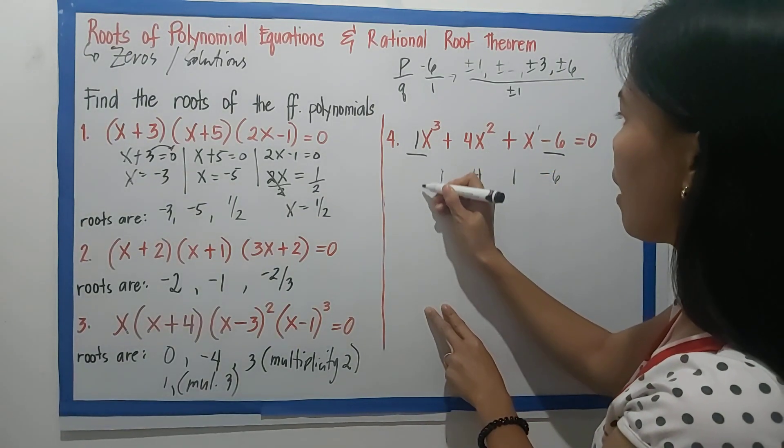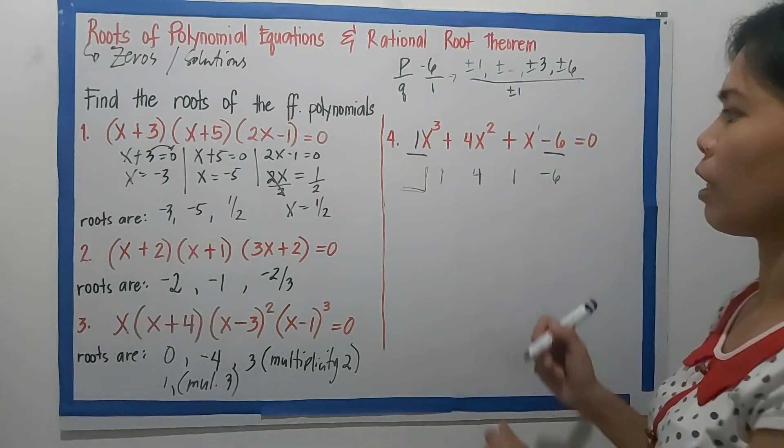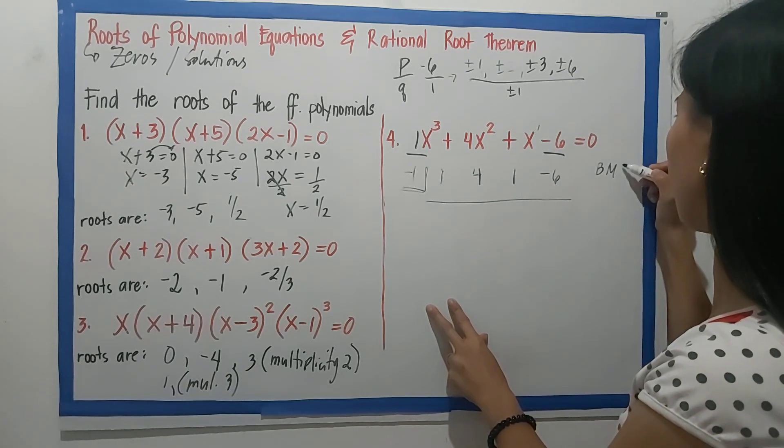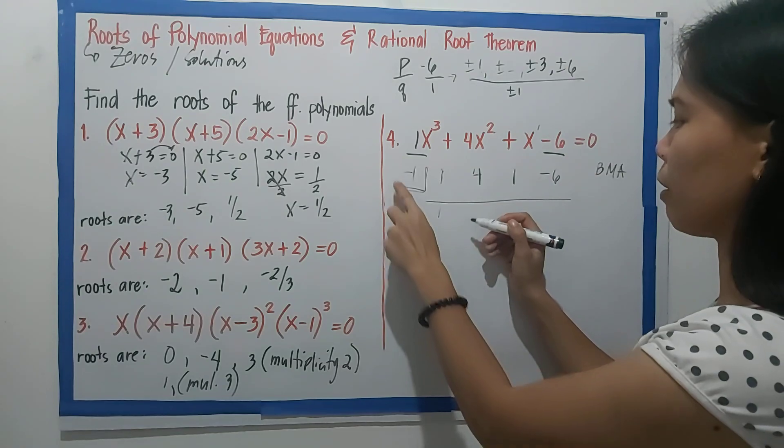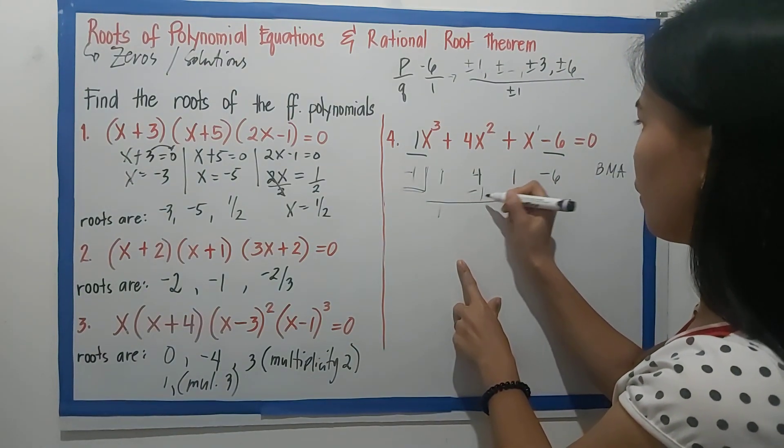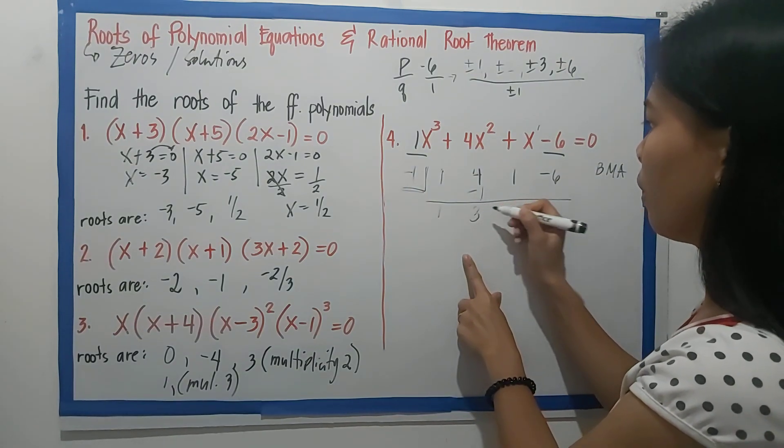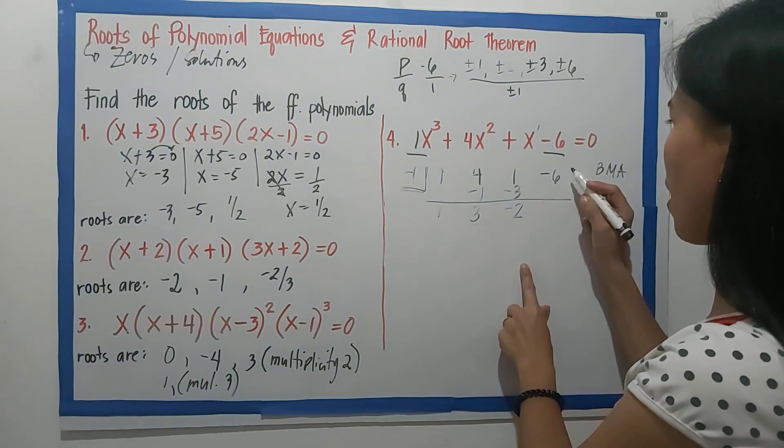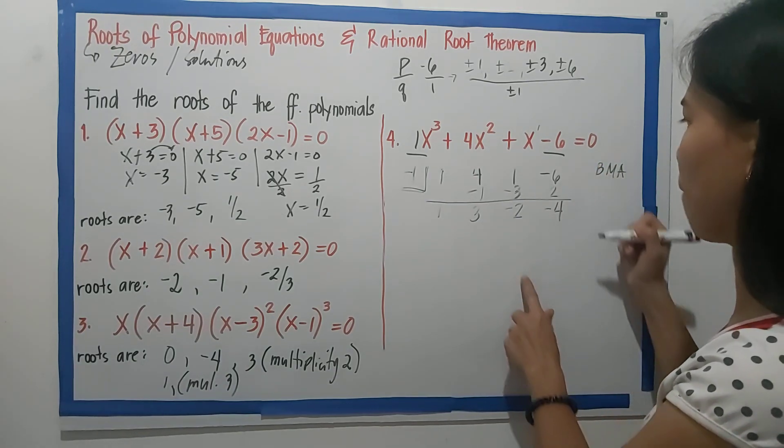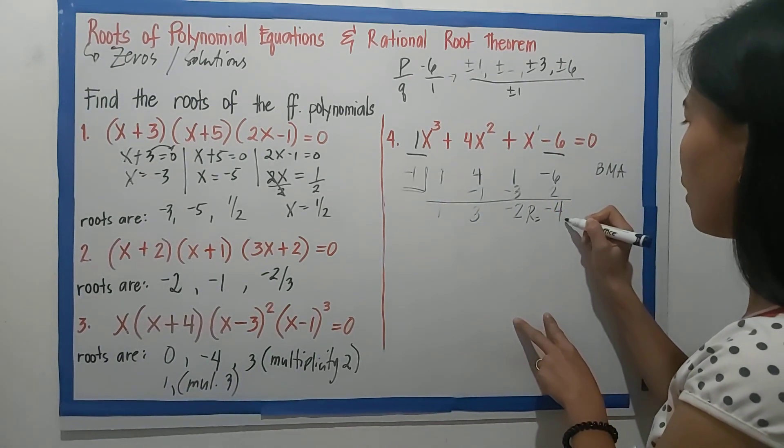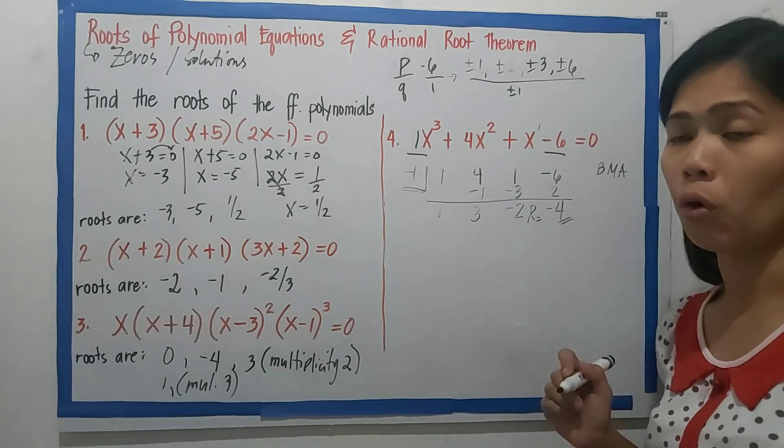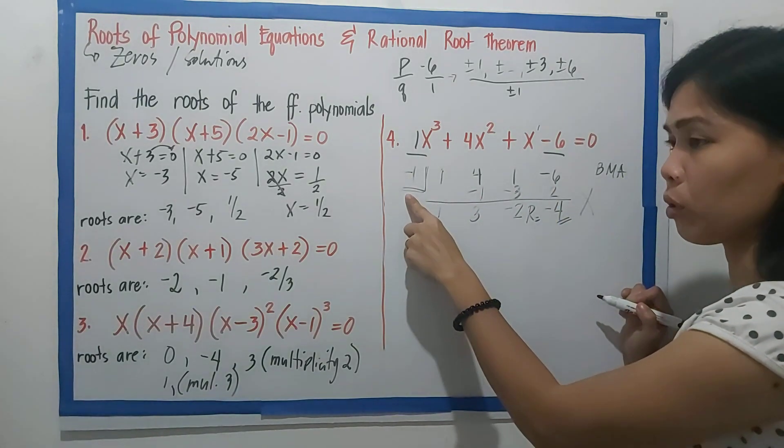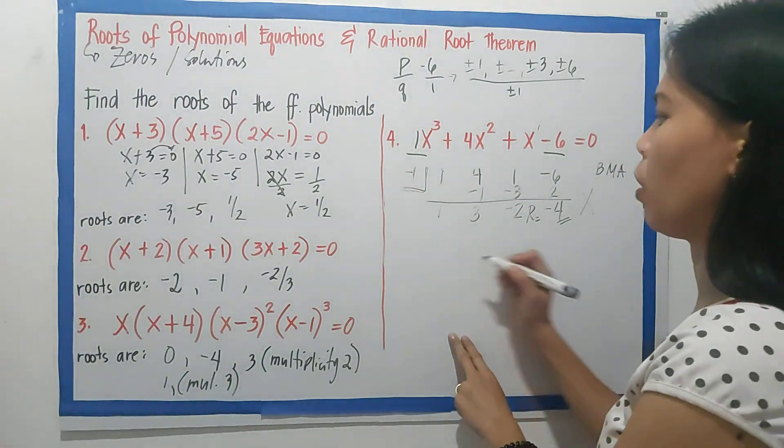And then, let us choose among these factors which one we'll use. So let's try -1 first. We'll use bring down, multiply, and add. Bring down 1, multiply 1 to -1, that is -1. 4 plus -1 is 3. 3 times -1 is -3. This is -2, multiply, that's positive 2. And this is -4. Using synthetic division, our remainder is -4. It didn't become 0. So, that means this is not a factor. This is not a root.